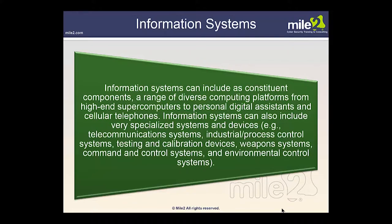Information systems can include many components that are part of a whole, including a range of diverse computing platforms from high-end supercomputers to personal digital assistants and cell phones. Information systems can also include specialized systems such as telecommunication systems, industrial process control systems, testing and calibration systems, weapon systems, command and control systems, and environmental control systems — a great variety of types of systems.